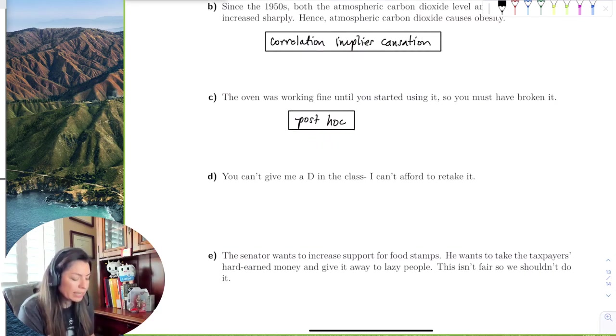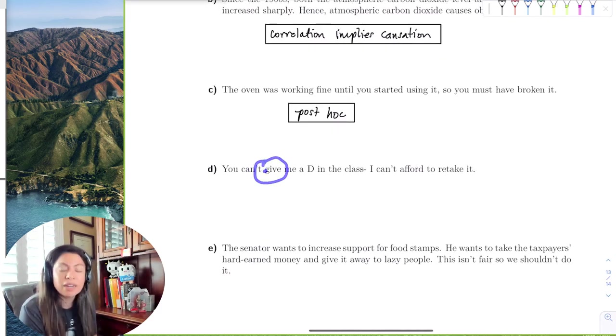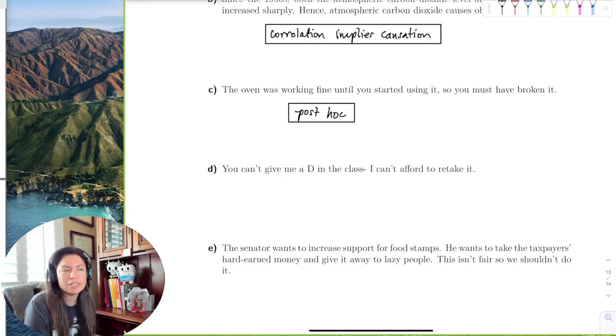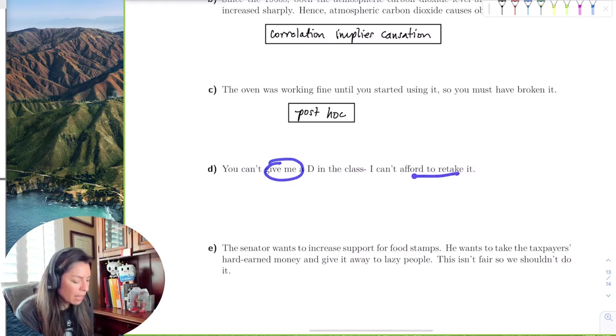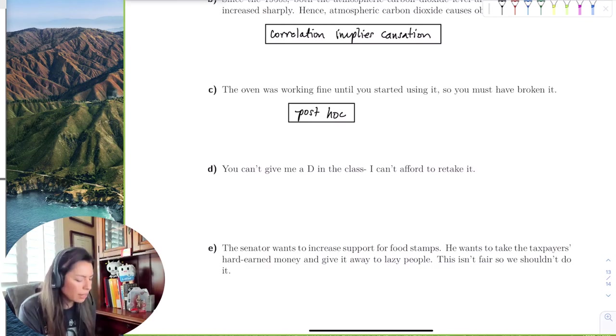You can't give me a D in the class. I can't afford to retake it, right? So you cannot give me a D, right? Well, the word give itself is bothersome because we don't give grades, right? We earn grades. And so if this student didn't earn a grade, then somehow their financial situation lies on our shoulders. That doesn't make sense, right?